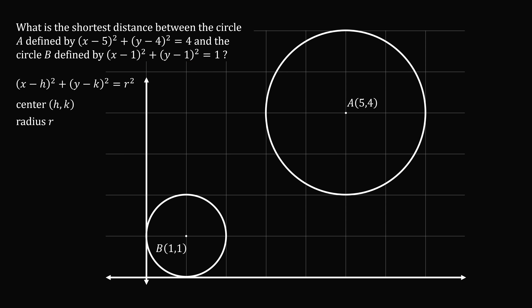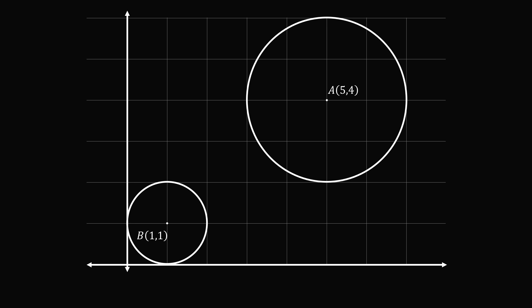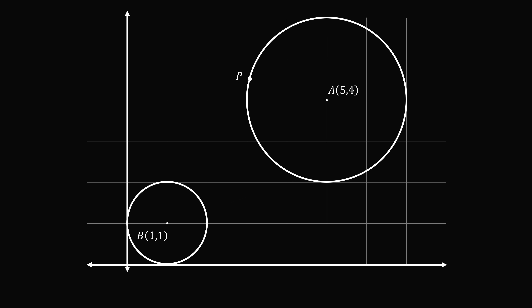So how are we supposed to find the shortest distance between the two circles? This is quite a daunting problem — let's go through a thought exercise. Imagine a point P on circle A; we could consider all possible paths to circle B and take the shortest one, giving point Q. We'd have to consider all possible positions of P and find the minimum length of PQ.